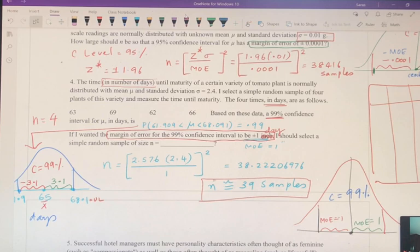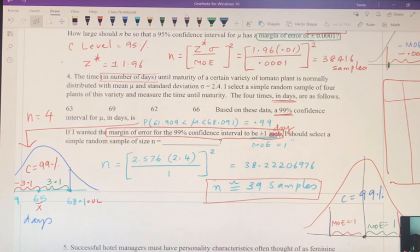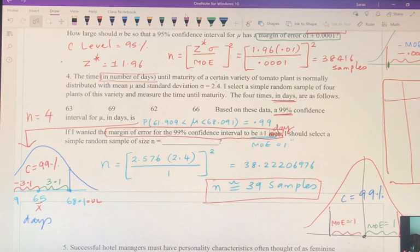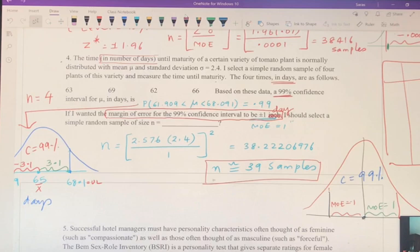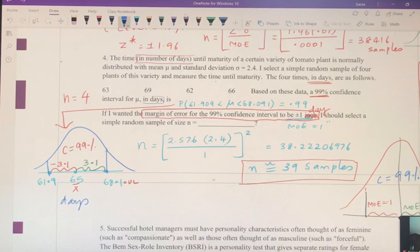The next one is the problem where the data is given and you are going to find the 99% confidence limits. You are also given the sigma value, which is 2.4, and the confidence level is 99%. That 99% is going to give you the z* value of 2.576. The margin of error is going to be plus or minus one day because your data is given in days.